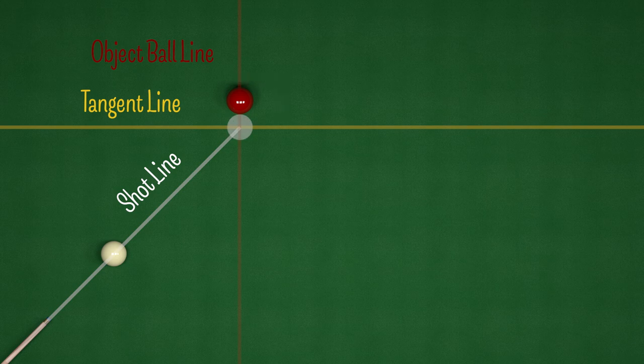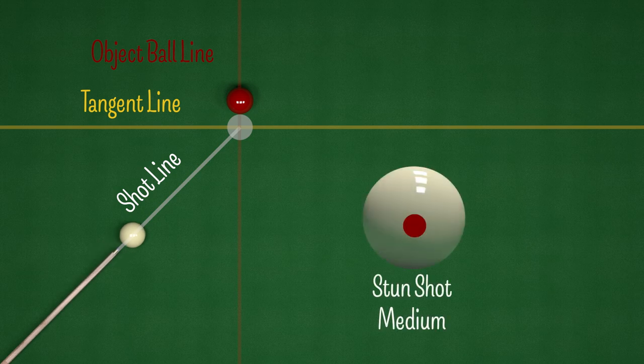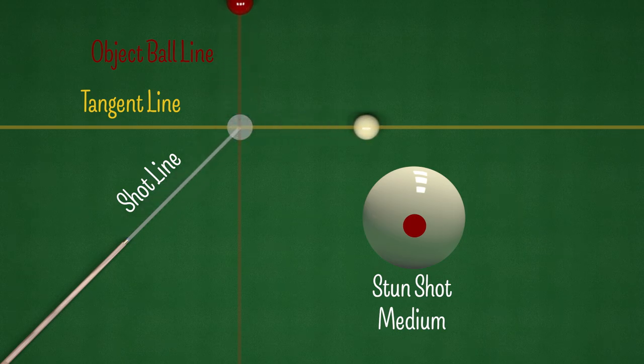If we can get the cue ball to contact the object ball with no spin on it whatsoever — a stun shot — then the cue ball will make contact and then head off along that tangent line.